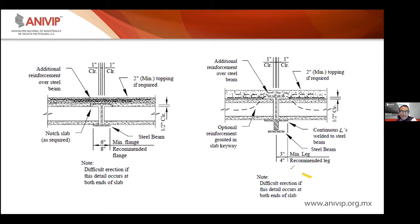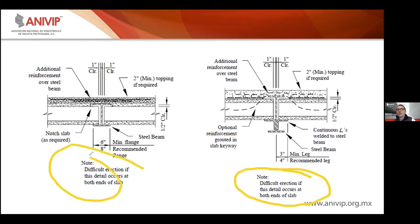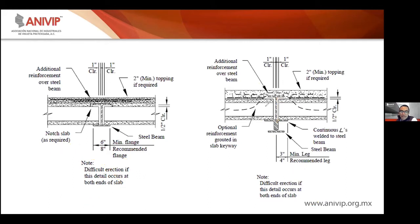En algunos casos puede resultar complicada la instalación. Resulta complicado cuando no dejamos suficiente holgura. Mientras dejemos la holgura suficiente para maniobrar la placa alveolar o el elemento prefabricado, no habrá problema. Obviamente, si separamos la placa del alma del elemento metálico, vamos a tener un mayor momento en el ángulo de acero, por lo que en algunos casos se les colocan cartabones o se hacen un poco más gruesos.